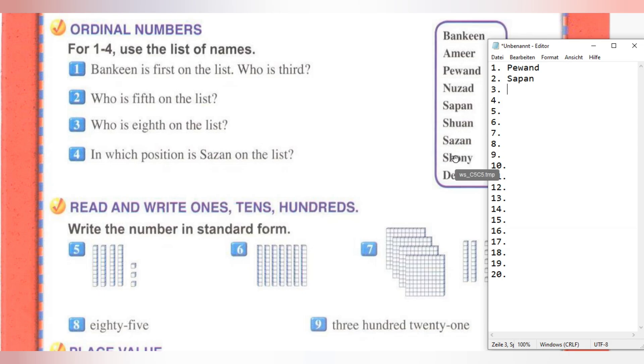Question number four: In which position is Sazan on the list? We can see that Sazan is on position number seven, and we must write seventh.